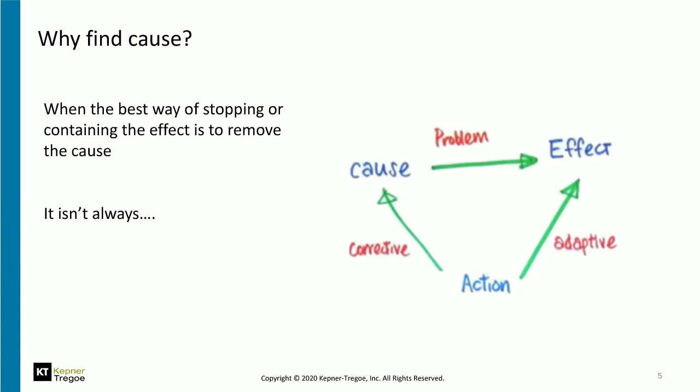So why would we want to find cause? The answer is: if the best way of containing the effect is to remove the cause. We often do workarounds — we've all seen our electronic devices slow down or become unruly. We happily reboot them as long as the disruption is small and the need to do it is infrequent. We know it's not going to solve the problem, but the effort of calling the help desk and raising a ticket and answering seemingly irrelevant questions may be too much.